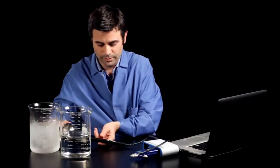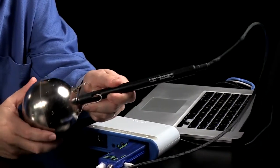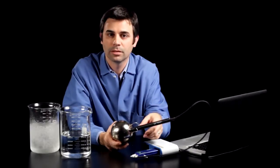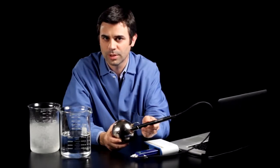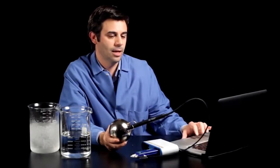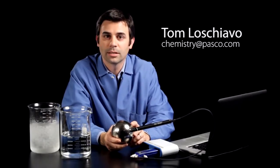So this absolute zero apparatus is a great tool for looking at the relationship between pressure and temperature, for getting to the ideas behind the Kelvin scale and absolute zero, which is something that students always question. How do we know? This has been Tom Loschiavo, Chemistry Education Manager at PASCO Scientific. If you have any questions or comments, please reach me at chemistry at PASCO.com. Thank you.